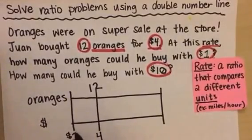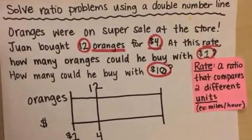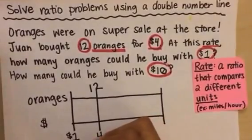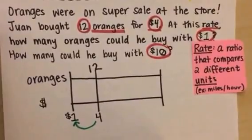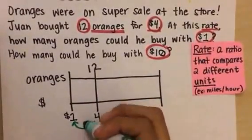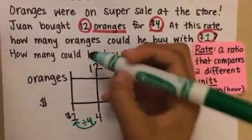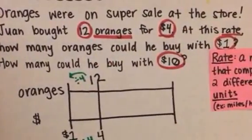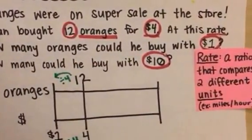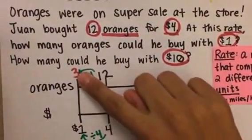So what number goes up here? Well, the cool thing when we use double number lines is that we look for patterns in the numbers. So if I look for a pattern going from four to one, can I go from four to one with multiplication or division? Yeah, I can divide by four, which means that I need to do the same thing to the top part of my ratio. Divide by four.